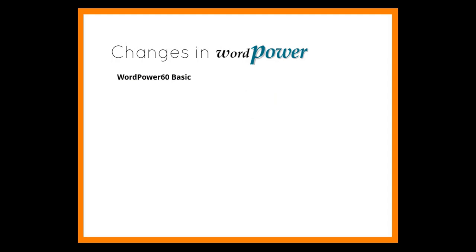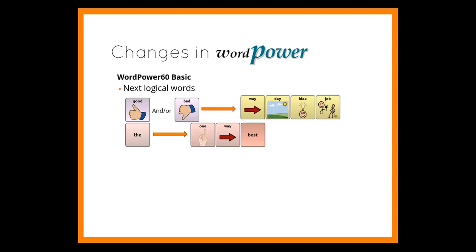In WordPower 60 Basic, next logical words were updated. For example, tapping 'good' or 'bad' opens up 'way,' 'day,' 'idea,' and 'job.' The word 'the' opens up 'one,' 'way,' and 'best.'